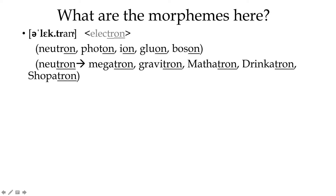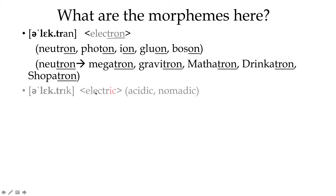So we have three different hypotheses: either 'electron' is a single morpheme meaning this electrically charged particle; it could be 'electro' plus '-on,' where 'electro' means electricity and '-on' means particle; or maybe 'elec' means something and '-tron' means a machine — but that doesn't seem to make sense since no machine is involved in an electron. Looking at more data: 'electric' — the '-ic' ending attaches to a noun to create an adjective, like 'acid' → 'acidic,' 'nomad' → 'nomadic.' So maybe it's 'electro' plus '-ic.'